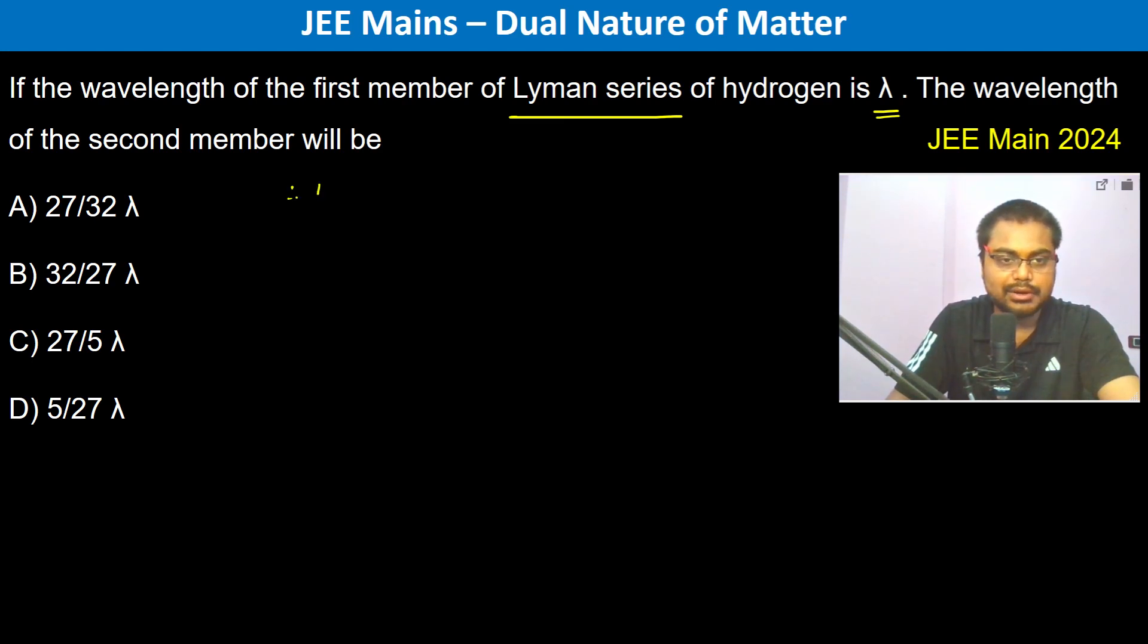Therefore we can write hc by λ is equal to minus 13.6 electron volt. Now this is first member of the Lyman series so therefore it's going to be 2 to 1, so 1 by 2 square minus 1 by 1 square.